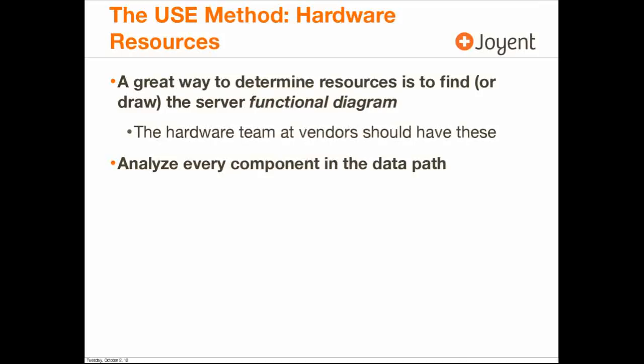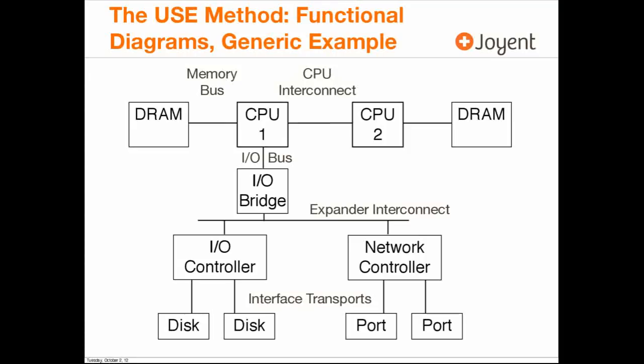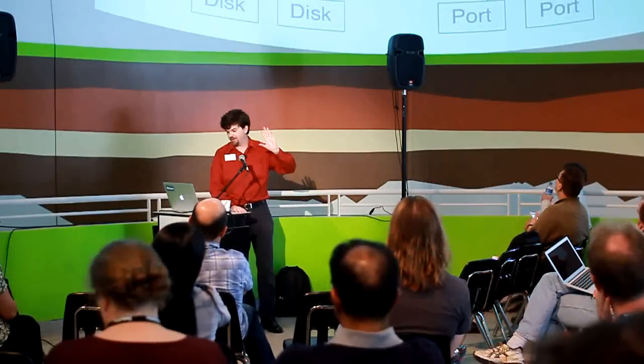There's a lot of stuff in a system. A great way to figure it out is to go find the server functional diagram. When I used to work at Sun, the best people to ask were the guys on the hardware team — they had the blueprints and fantastic detailed architectural diagrams. The intent is you analyze every component in a data path, because any component can be a bottleneck. Here's a very simple example: a two-socket system with two CPUs, each CPU has its own memory bus, an IO bus with a south bridge connecting to an IO controller, and then IO controllers where disks and network controllers are attached.